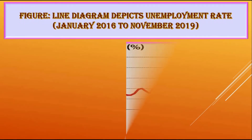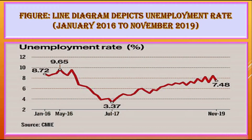This line diagram depicts the unemployment rate from January 2016 to November 2019. The unemployment rate in January 2016 was 8.72%. In July 2017, the unemployment rate decreased significantly, but then started rising again, reaching 7.48% in November 2019.